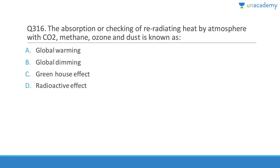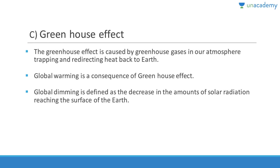Question 316: The absorption of re-radiating heat by the atmosphere involving CO2, methane, ozone, and dust is called the greenhouse effect — not global warming. Global warming is a consequence of the greenhouse effect. Greenhouse gases like CH4, CO2, and nitrogen oxides trap and redirect heat back to Earth. Global dimming is the decrease in total solar radiation reaching Earth's surface.